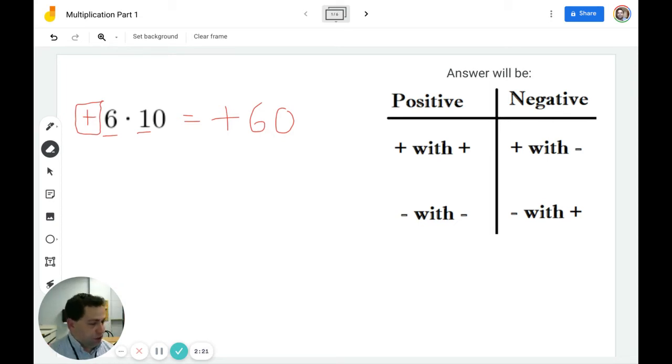Just to expand on that a little bit, if it was 6 times 100, it would be 600. 6 times 1,000 would be 6,000, et cetera.